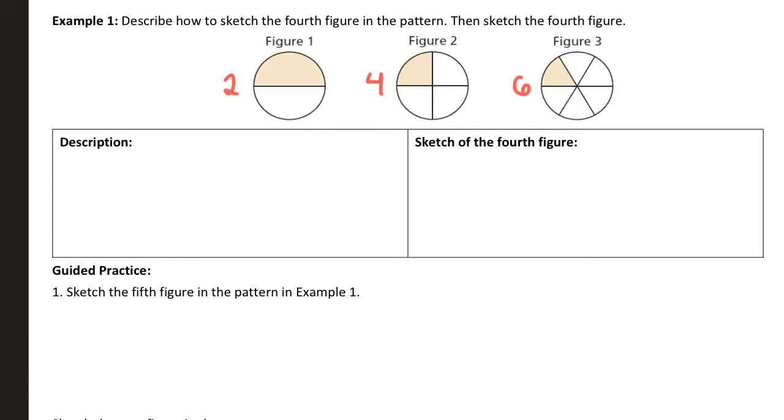So the connection I would make is there's always twice as many sections. In figure one, there's two. In figure two, there's four. In figure three, there's six. So our next figure, figure four, I would say it's going to be a circle, and I would say it has eight sections, and one is shaded, right?